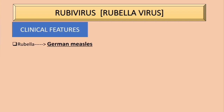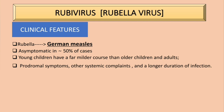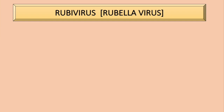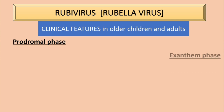Rubella is also known as German measles. In 50% of cases it is asymptomatic. Young children have a far milder course than older children and adults — older children and adults present with prodromal symptoms and systemic complaints like arthritis, with a longer duration of infection. A rubella infection can be grouped into two categories: rubella in older children and adults, and congenital rubella syndrome.